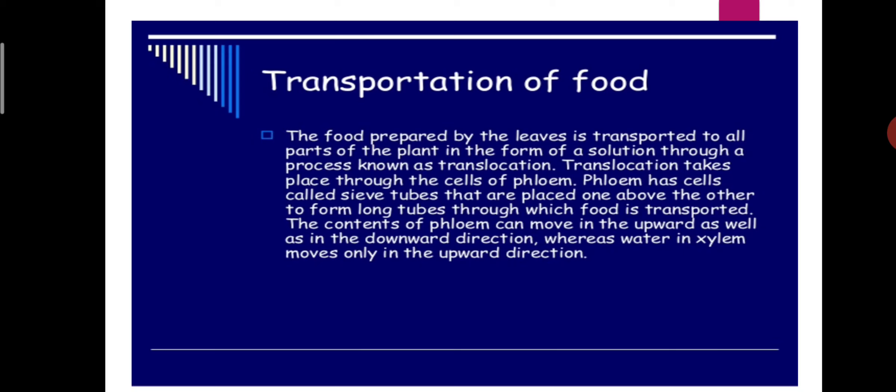Today we are going to discuss the second topic in Part 2, that is transportation of food. We all know that food is prepared in plants in the leaf part. So how is the food transported from the leaf to all parts of the plant? The food prepared by the leaves is transported to all parts of the plant in the form of a solution through a process known as translocation.